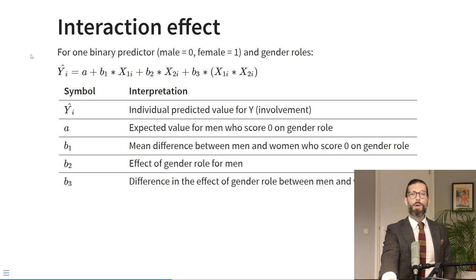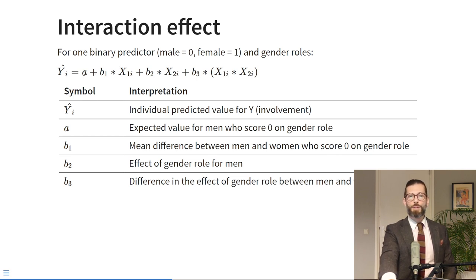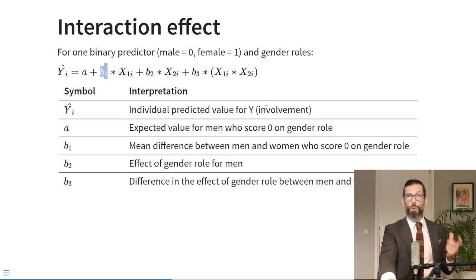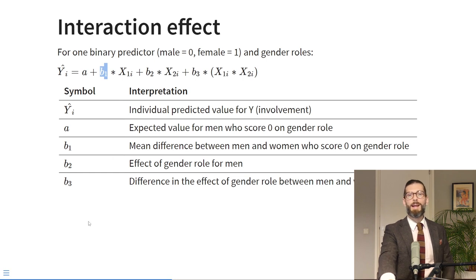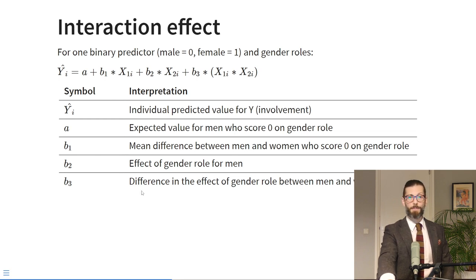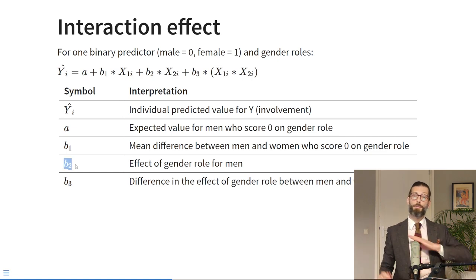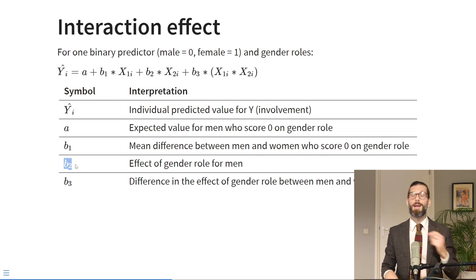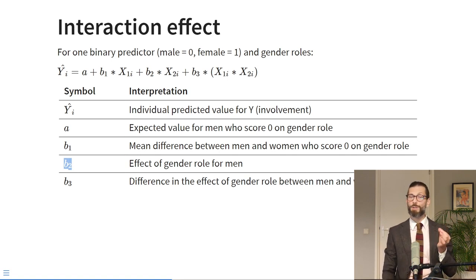How are those two different effects represented in a regression model with an interaction term? In a regression equation with an interaction term, the intercept A is the expected value for men who score zero on gender roles. B1 is the mean difference between men and women who score zero on gender roles. B2 is the slope — the effect of gender roles for men. And B3 is the difference in the effect of gender roles between men and women. So if B2 is a positive slope for men, B3 must be negative to cancel out that positive effect and arrive at a near-zero effect for women.